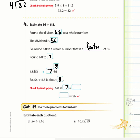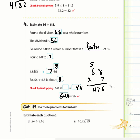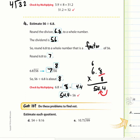Checking: 6.8 × 8. Eight times 8 is 64, eight times 4 is 48 plus 6 is 54 — with one decimal place, that's 54.4. Since 54.4 is close to 56, our estimate of 8 is reasonable.